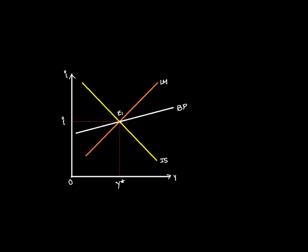Fixed exchange rates increase in money supply when BP curve is flatter than LM curve. The increase in money supply will shift the LM curve to the right at the new equilibrium. There is deficit in the balance of payments.